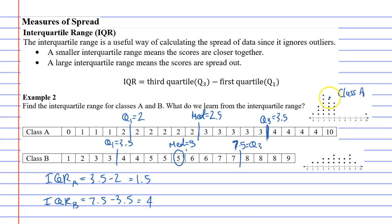This is class A here. We can see that class A is grouped close together, while class B is all spread out. So our interquartile range is a good indicator of how spread out our data is.